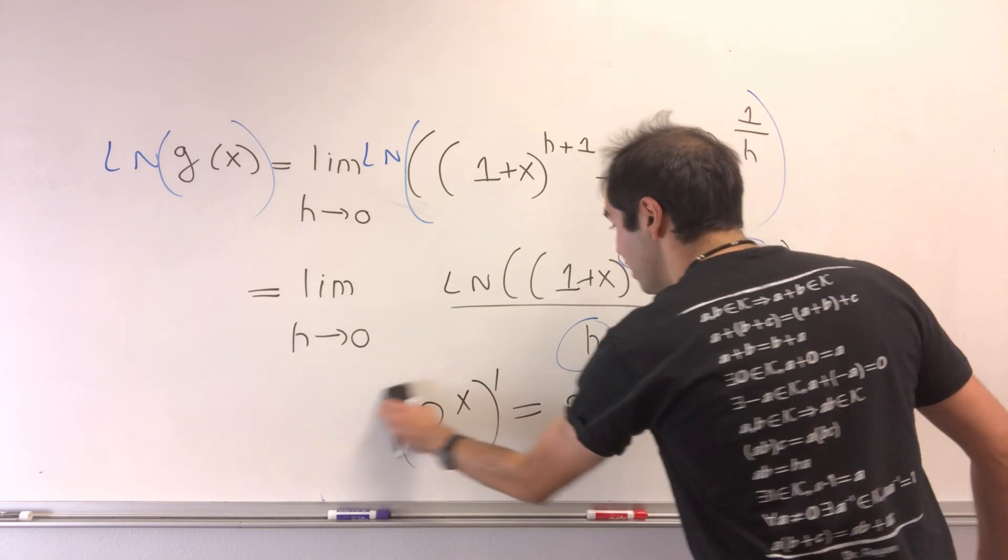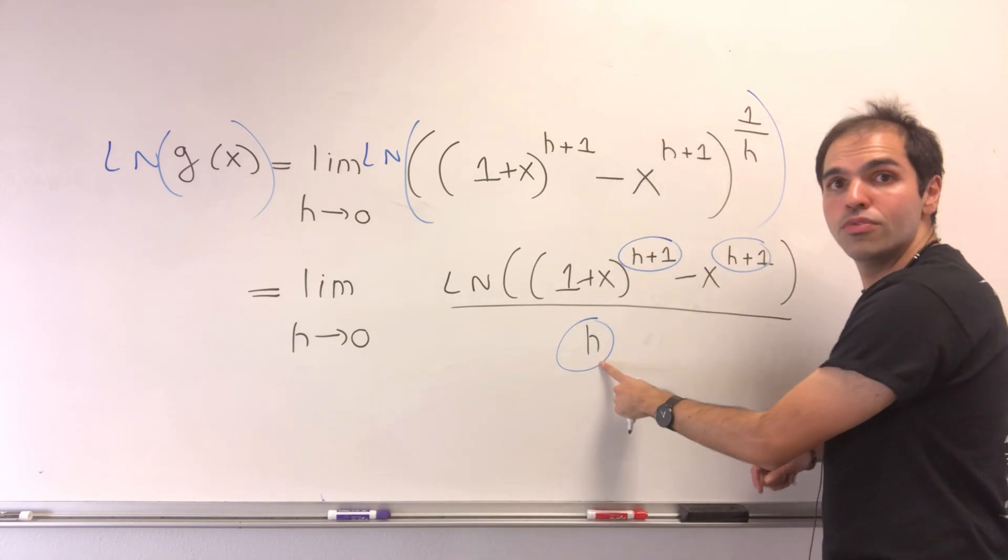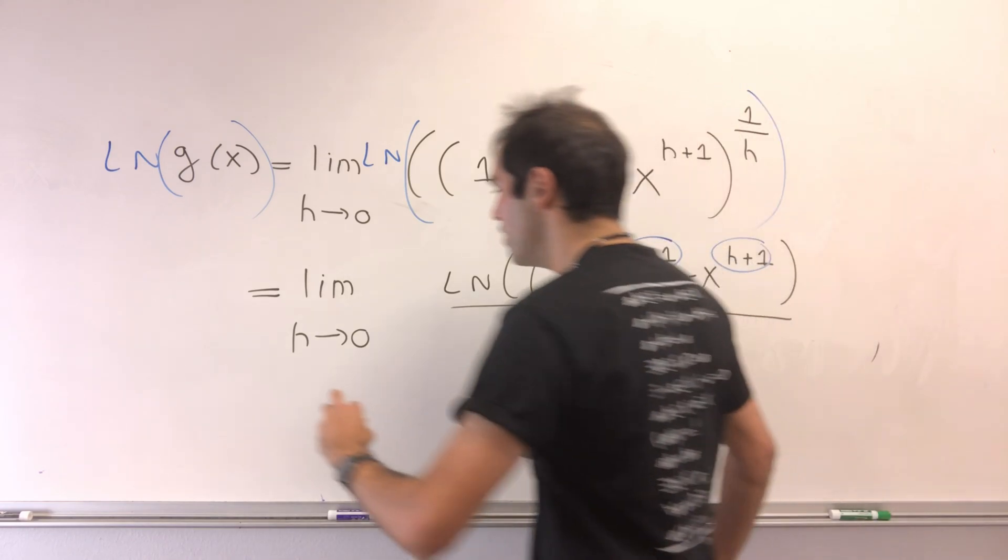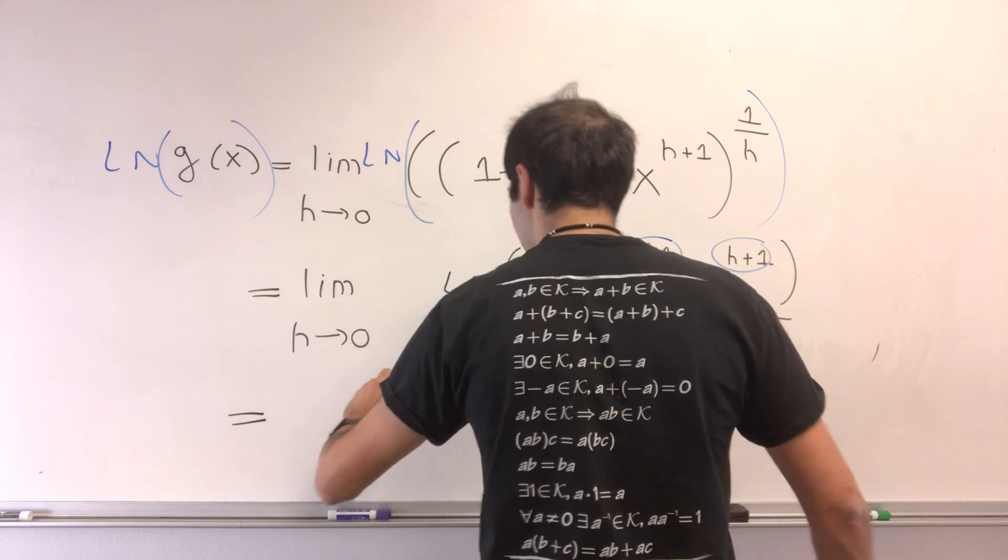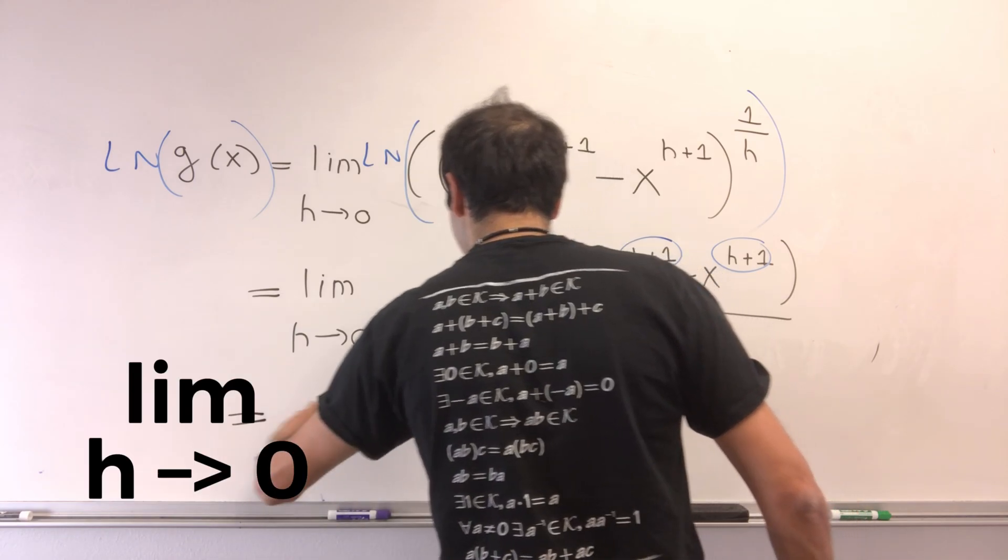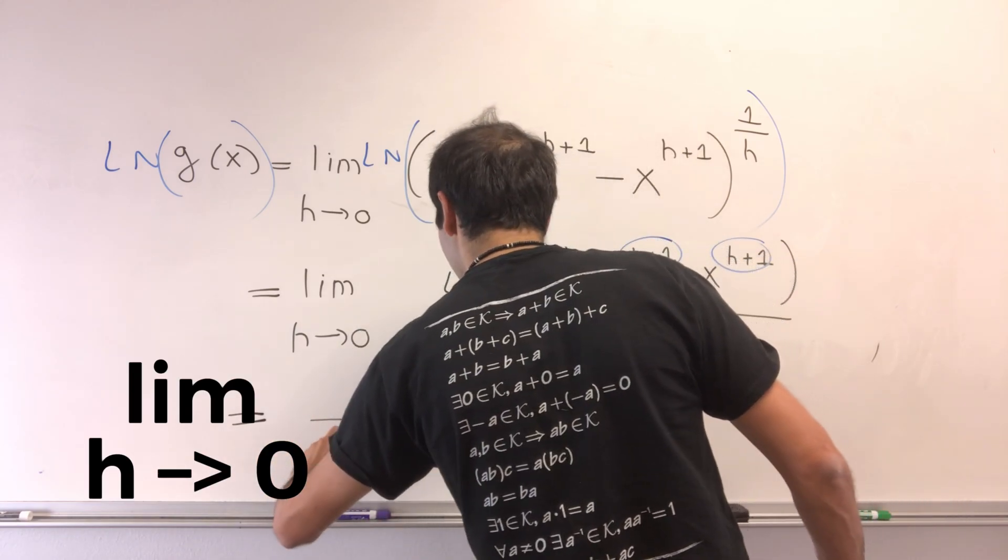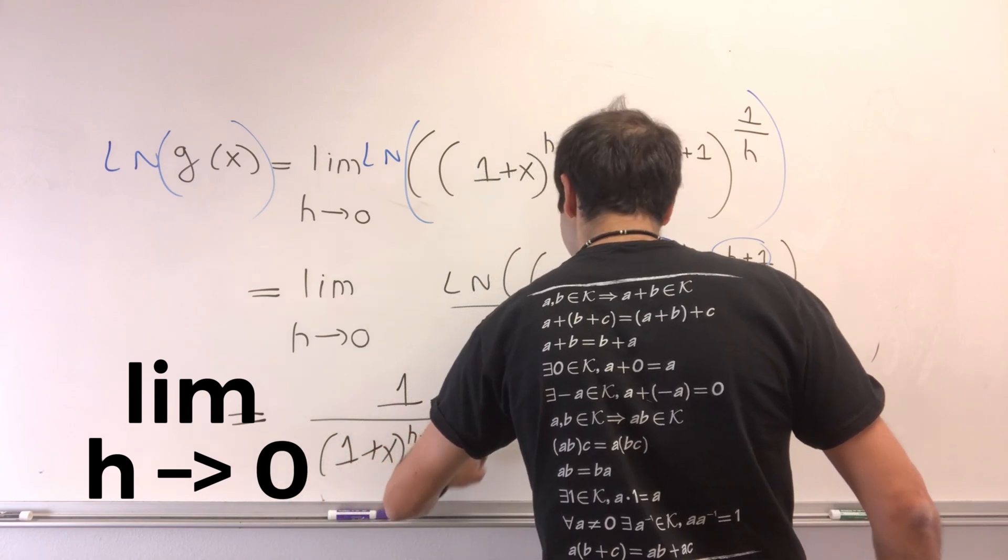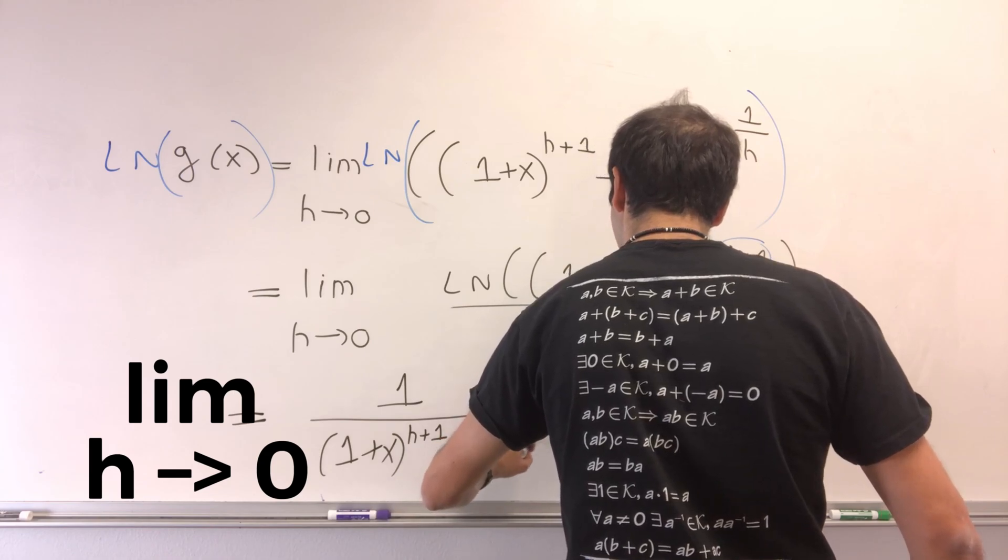Now let's do it. By L'Hopital's rule, the derivative of the denominator is just 1. The derivative of the numerator, by using the chain rule, gives you 1 over 1 plus x to the h plus 1 minus x to the h plus 1.